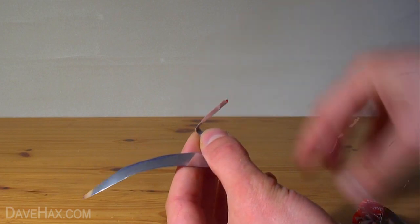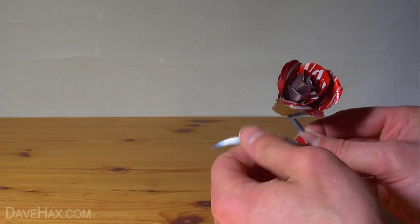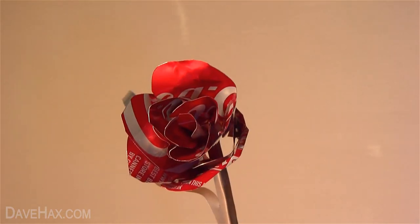Next, bend over the top and push the flower onto the stem. And there we have it, our finished Coca-Cola can rose.